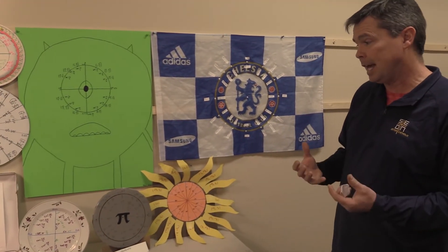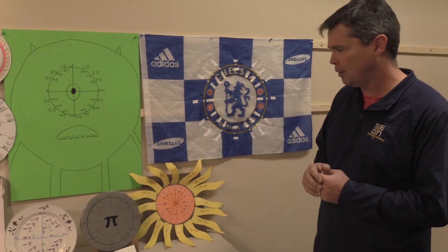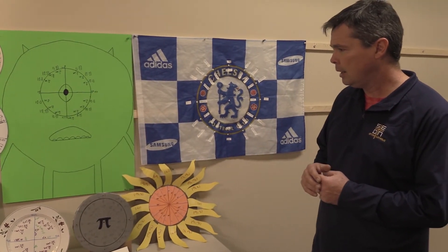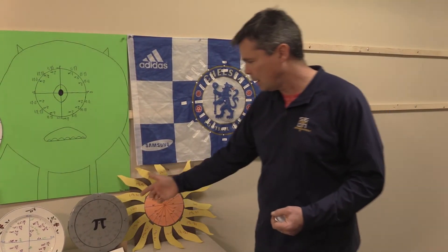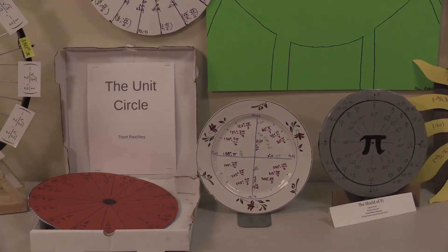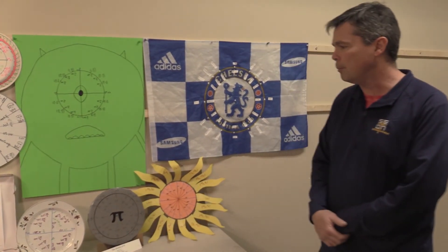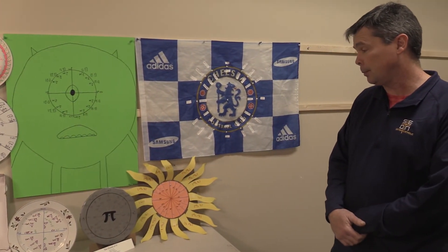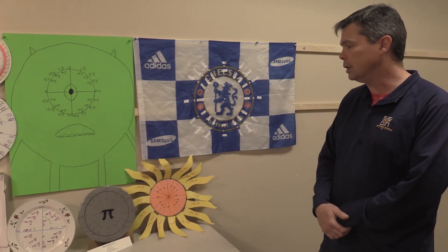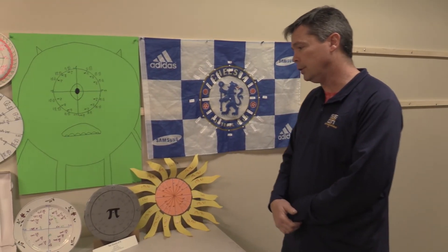A unit circle has a radius that is equal to one and it shows the different points on the circle and what the values are. Sometimes they're whole numbers, but many times they're irrational numbers. If you can memorize one quadrant, you can solve many trigonometry problems just by knowing that one quadrant of the unit circle.